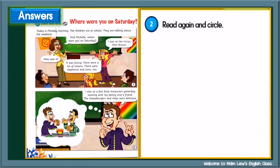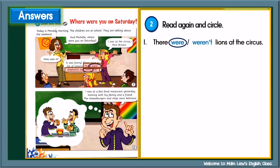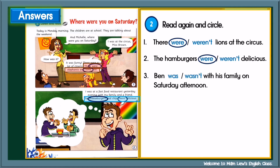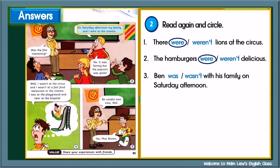Now let's look at activity 2. Read again and circle. Number 1: There were or weren't lions at the circus. Let's check — there were elephants and lions too. So number 1: there were lions at the circus. Number 2: The hamburgers were or weren't delicious. Let's check — the cheeseburgers and chips were delicious. So number 2: the hamburgers were delicious. Number 3: Ben was or wasn't with his family on Saturday afternoon. Let's check — on Saturday afternoon, my family and I were at the cinema. So number 3: Ben was with his family on Saturday afternoon.